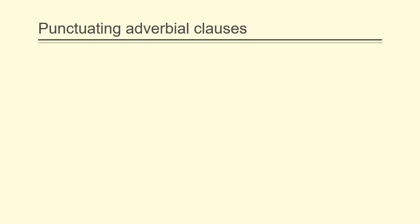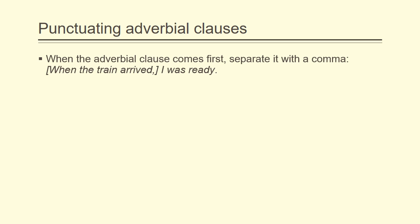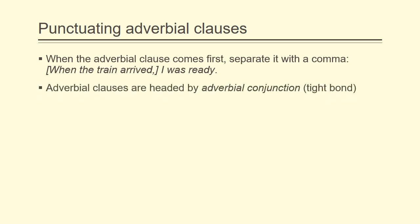Next, let's take a look at how to punctuate adverbial clauses. This is pretty simple: when the adverbial clause comes first, we just separate it with a comma. So: 'When the train arrived, comma, I was ready.' Also, just remember that adverbial clauses are headed by an adverbial conjunction, and the adverbial conjunction and the original independent clause that follows have a tight bond. So we don't really throw commas in between them or move the conjunction around.